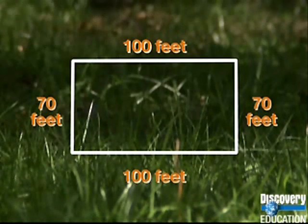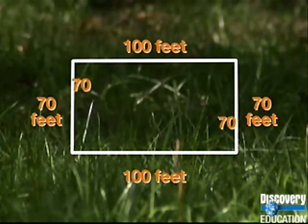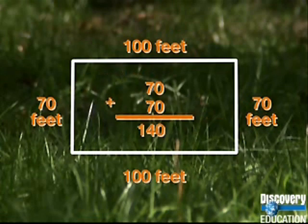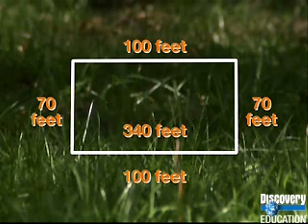You can add that using mental math. Adding the two 100-foot sides together equals 200, then adding the 70-foot sides together equals 140. 200 plus 140 equals 340 feet. That means the perimeter of this field is 340 feet.